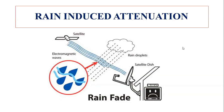These two segments are the ground and space segments. Whenever the signal reaches the transponder, the transponder receives the signal and transmits it to the ground station. This is the normal operation happening in a satellite — sending a signal from the space segment to the ground station.